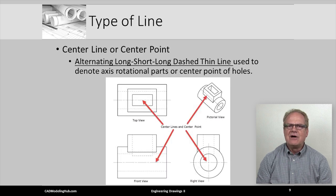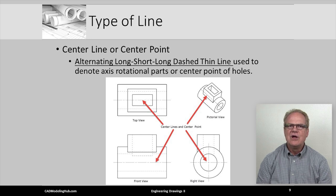Center lines or center points are another important line type. These lines are thin and made up of a series of alternating long, short, long dashes. Center lines are used to denote an axis of rotation, whereas a center point is used to mark the center location of a hole or feature.